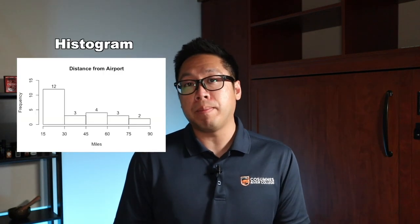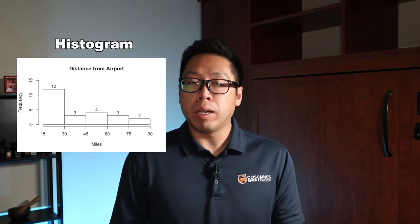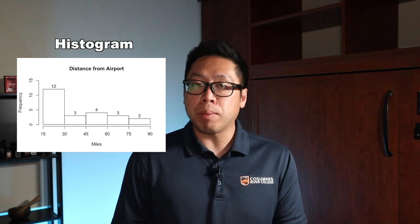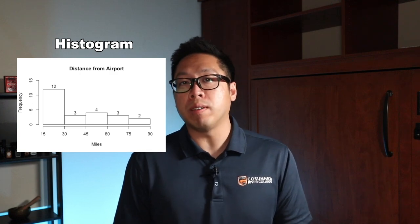The most common type of graph for quantitative data is the histogram. Today we'll talk about another type of graph for quantitative data called the Stem and Leaf Plot.